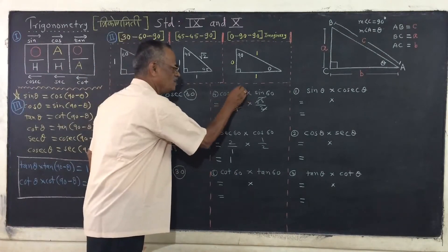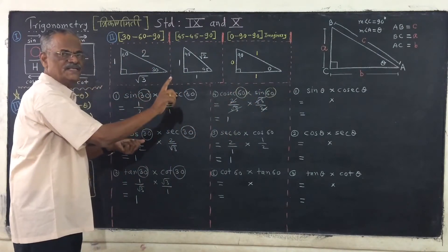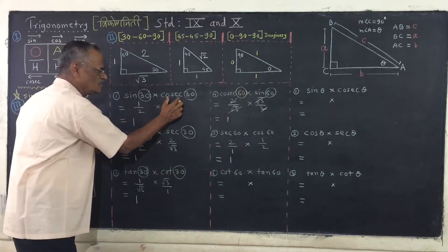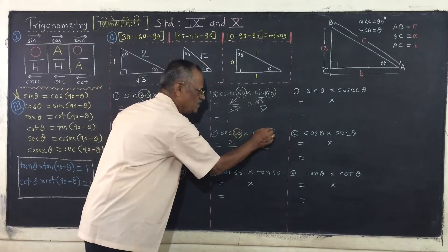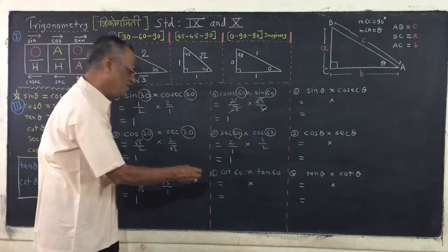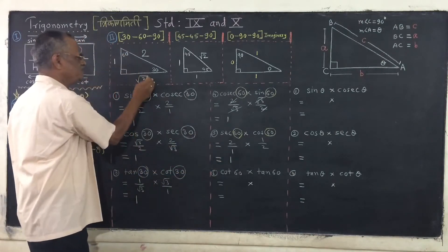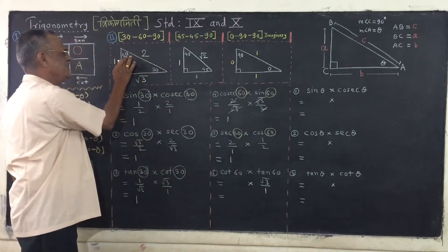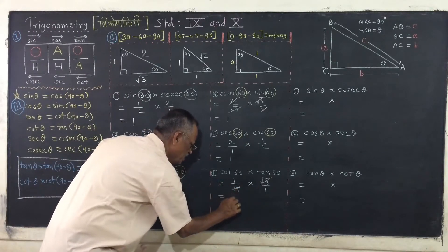What is that? Cosec of 60 into sine of 60 — same thing. Only the value of the angle is changing. Cosec and sine of the same angle — product is 1. Similarly, sec of 60 into cos of 60 — product is 1. You can try to find out cot of 60 into tan of 60. Tan of 60 is root 3 upon 1, and cot of 60 is adjacent upon opposite, that is 1 upon root 3. And you can see the product is, again, 1. Very, very important property you are getting.